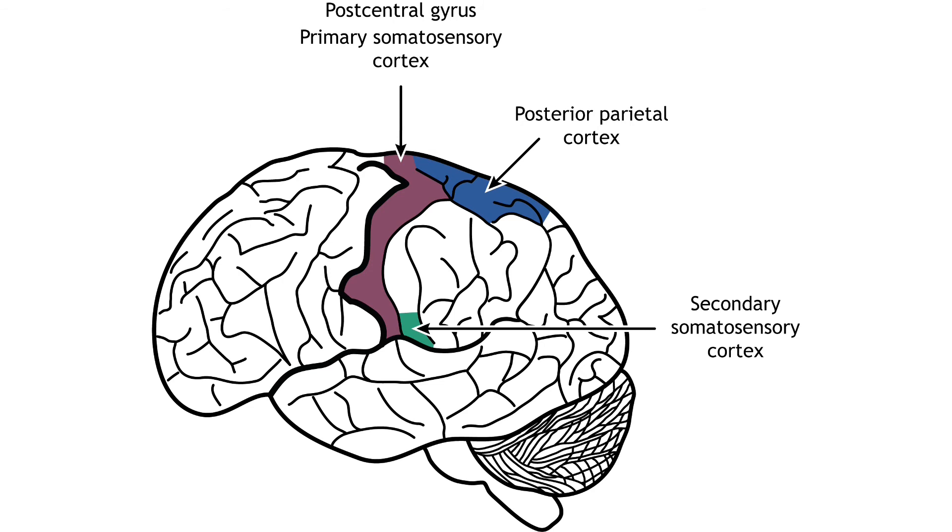The primary somatosensory cortex sends projections to other parietal lobe regions for higher level processing of touch information. The secondary somatosensory cortex, or S2, is located in the inferior parietal lobe, just above the lateral fissure.